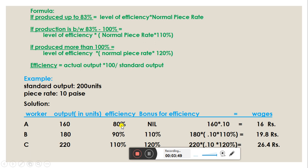Worker A has 80% efficiency, which is below 83%, so there is no bonus — the worker receives only the normal piece rate. Total wages for Worker A = ₹16. Worker B produces 180 units, giving an efficiency of 90%, which falls between 83% and 100%, so Worker B receives 110% of the normal piece rate. Worker B's wages = ₹19.80.